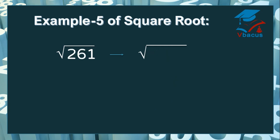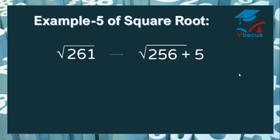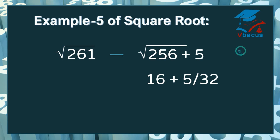Let us take one more example — 261. 261 is very close to 256. If we add 5, it will become 261. 256 is a perfect square number and the square root of 256 is 16. Let us divide 5 by the double of 16, that is 32.